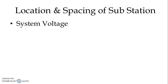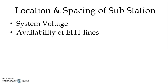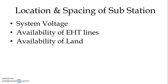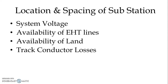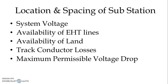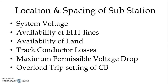The factors are: system voltage, availability of extra high tension lines, availability of land, track conductor losses, maximum permissible voltage drop, and overload trip setting of circuit breaker.